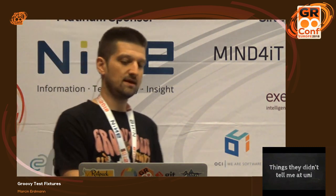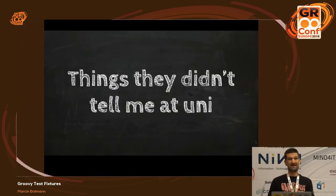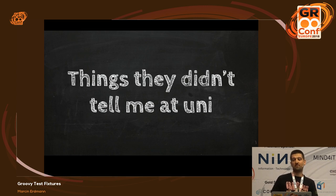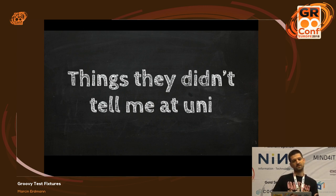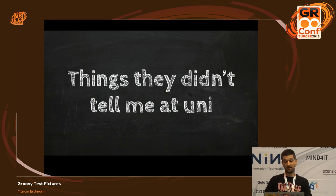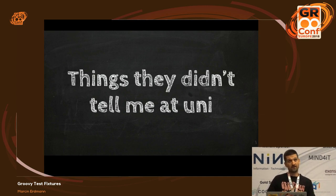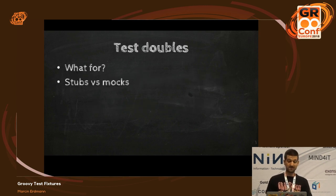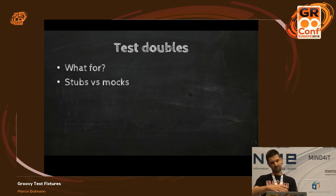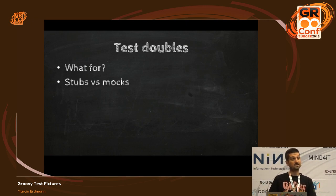I consider myself really lucky that back in the mid-noughties when I was at uni, we were actually told how to write unit tests — back in the day it wasn't really that popular. One thing they didn't show us is how to write unit tests for real-life classes that have collaborators. All we ever did was write tests for things like stacks with zero collaborators. So when you start writing unit tests for classes that have collaborators, you're going to need test doubles. If you really want to test a unit, you need to isolate it from the surrounding world — this is where test doubles come in.